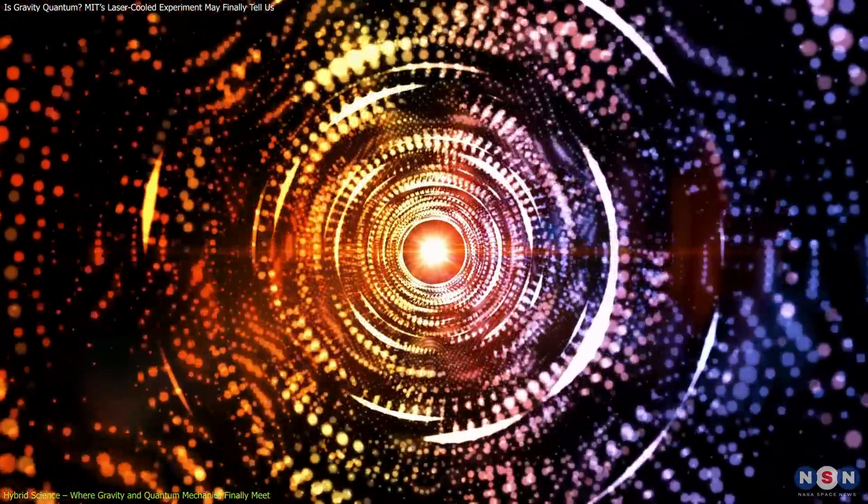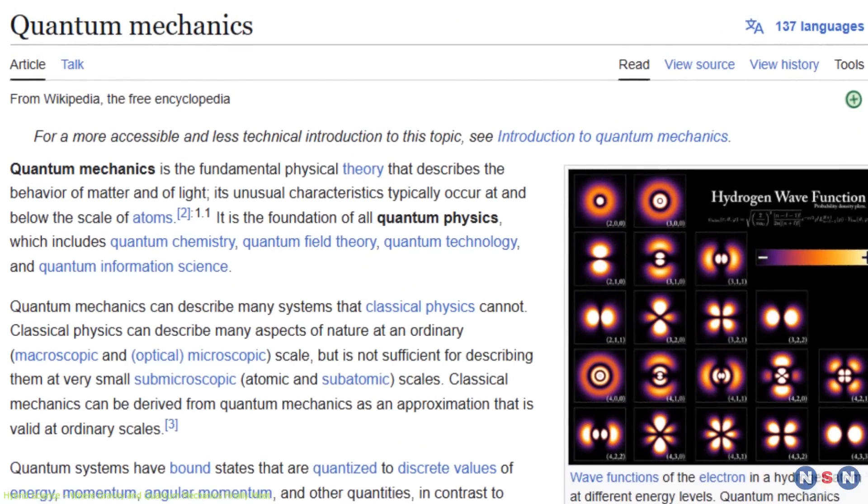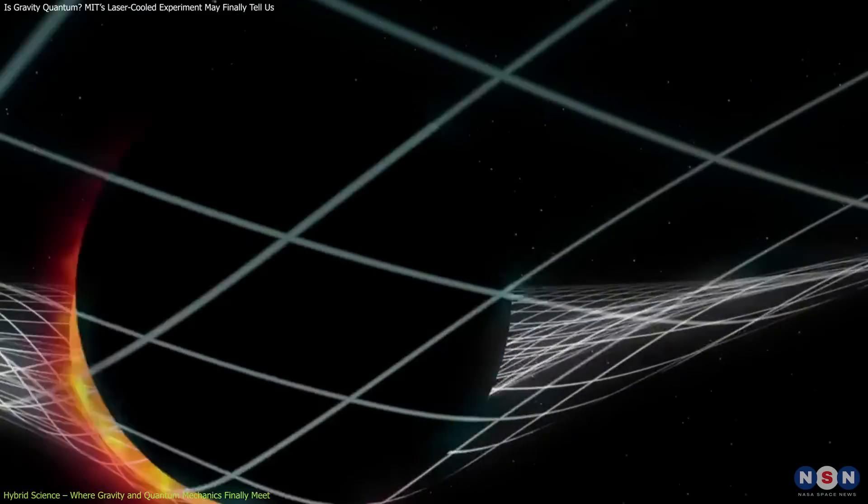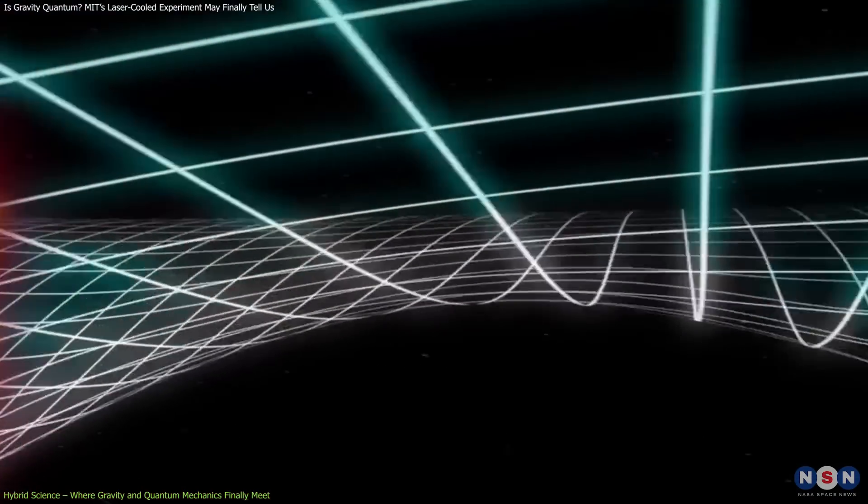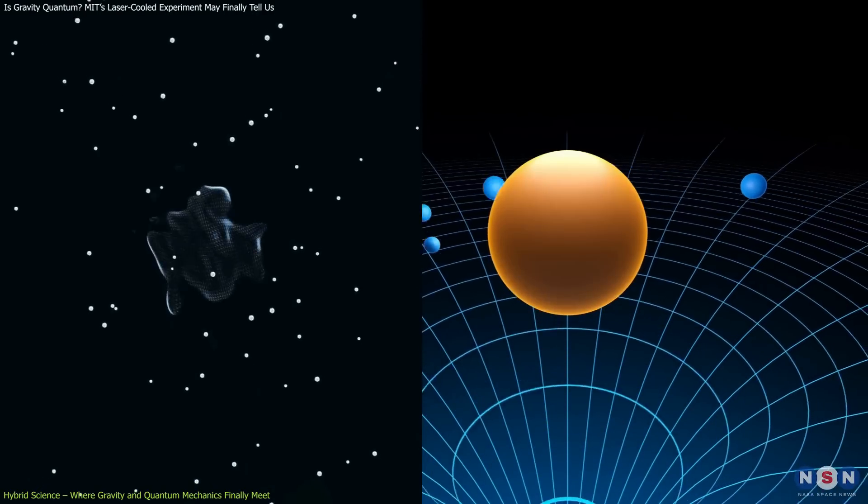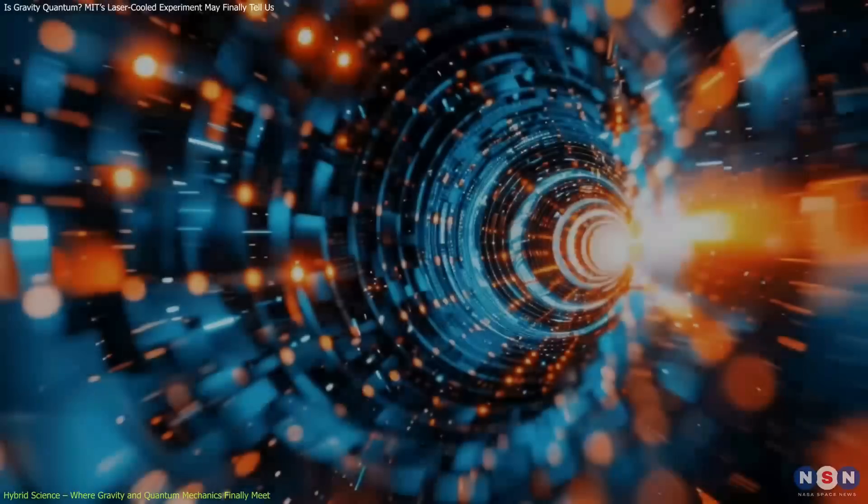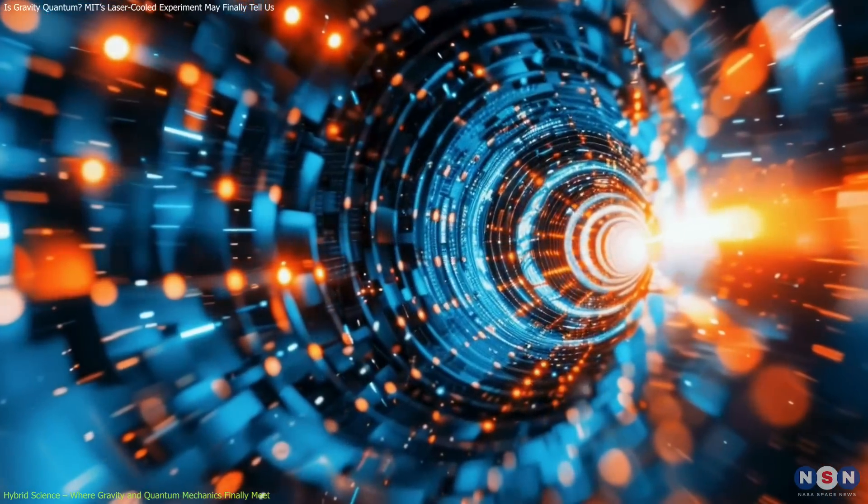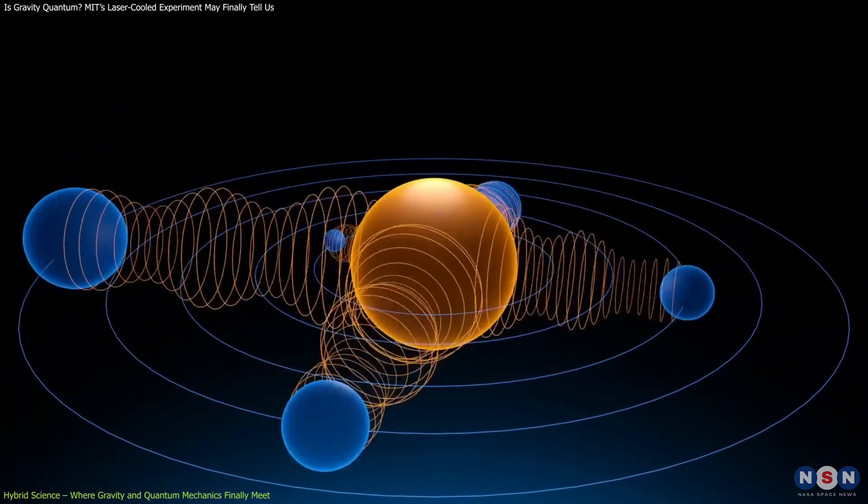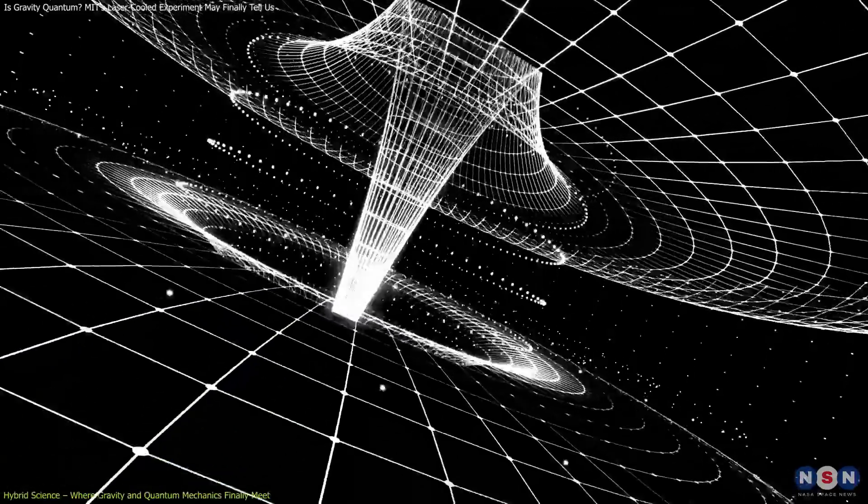The difficulty in merging general relativity with quantum mechanics lies in how differently they treat the universe. Quantum theory is built on uncertainty and superposition, where particles can exist in multiple states at once. General relativity is smooth and deterministic. It describes the curvature of spacetime with mathematical precision, but no built-in randomness. Physicists have long speculated that a full understanding of nature must combine both. But how? Many theories exist. Some propose that gravity must be quantized, potentially involving a theoretical particle called the graviton. Others argue gravity could be emergent, or even fundamentally classical. But without experimental tools to distinguish between these ideas, progress has stalled.